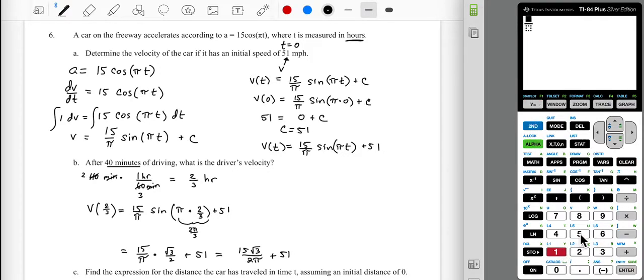Okay, 15 radical three over two pi, plus 51, and we're looking at about 55.135 miles per hour. So yeah, I mean, you could say 55 miles an hour, approximately.